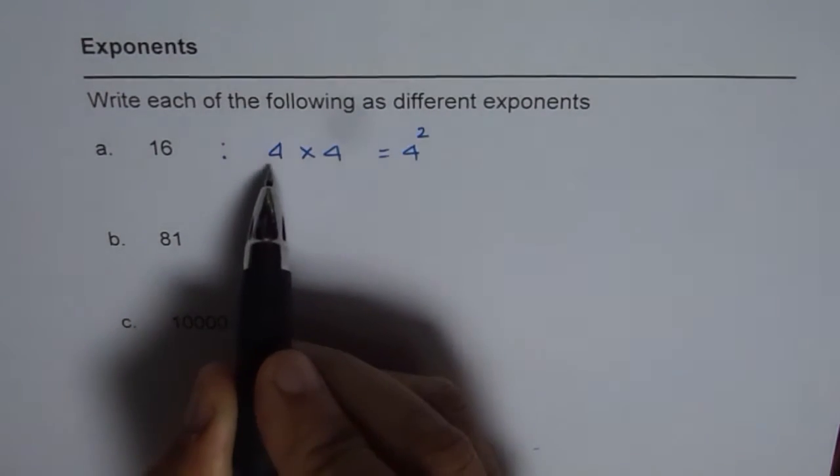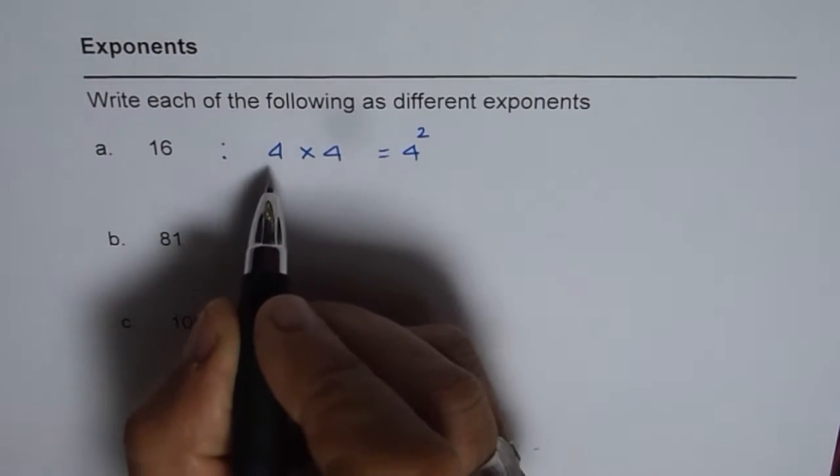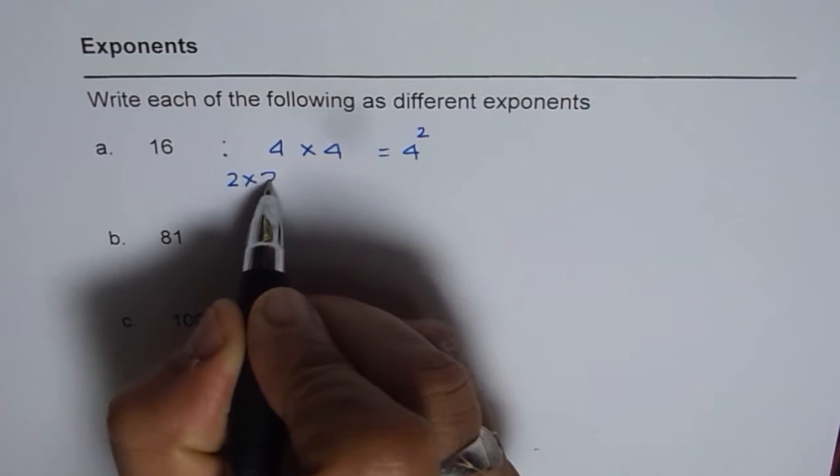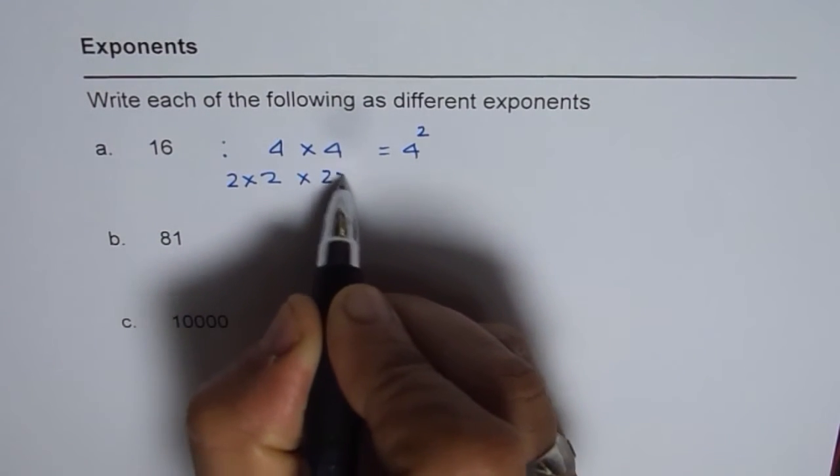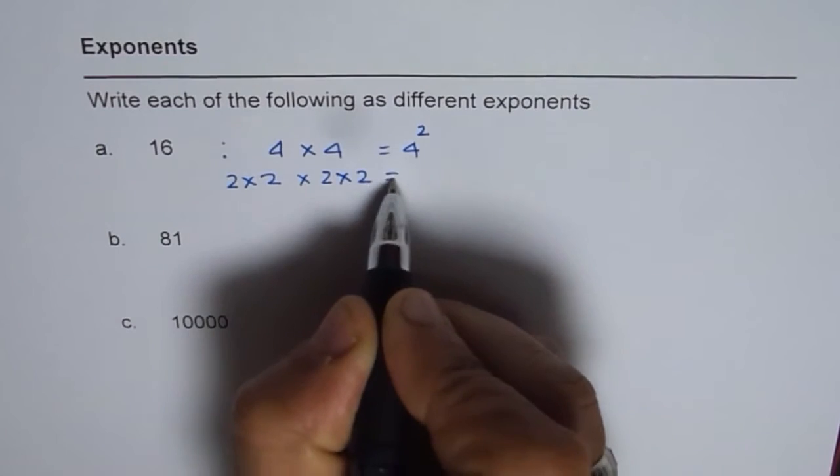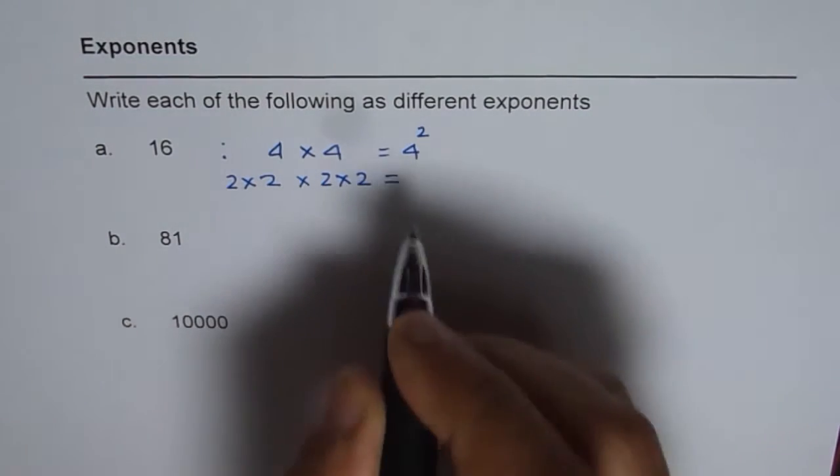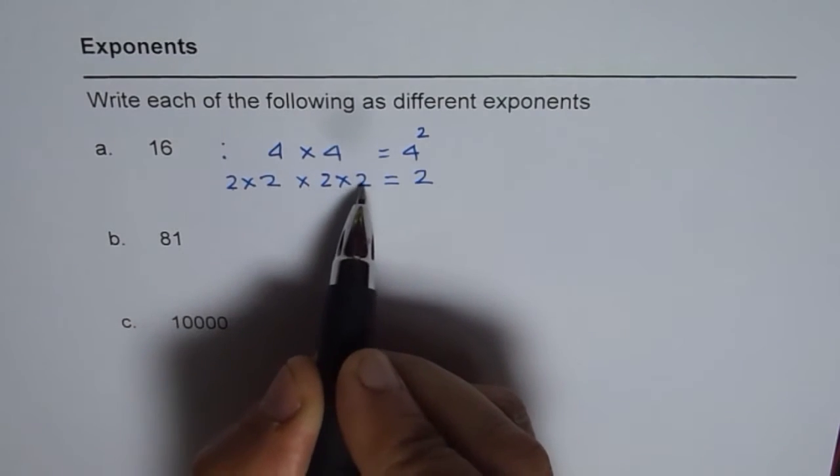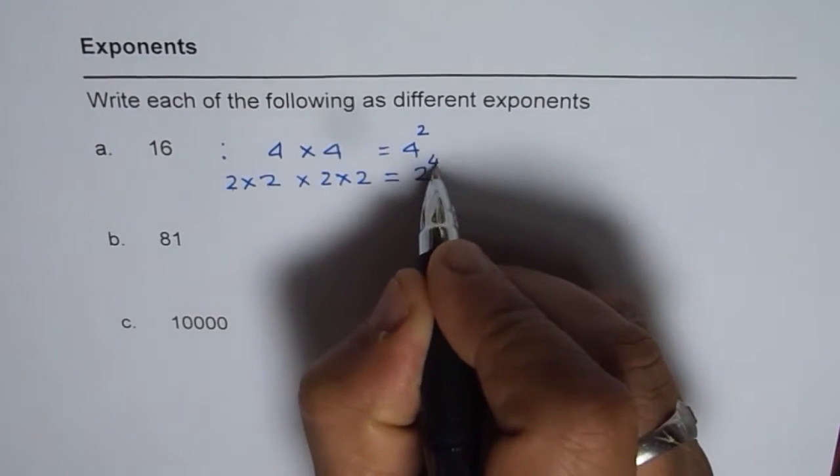Now we can write 4 as 2 times 2. So if I write each 4 as 2 times 2, what do I get? I get 2 as the base and exponent is 1, 2, 3, 4. So I get 2 to the power of 4.